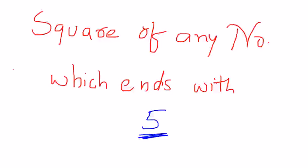Hello friends, I am Sunish from TeamMast. In this video I am going to discuss a short trick for finding the square of any number which ends with the digit 5. I discussed a Vedic Math trick before to find the square of any number, but this video is more precise about finding the square of any number which ends with digit 5. If you missed that video, you can see it — I am clicking on the link right now which is visible.